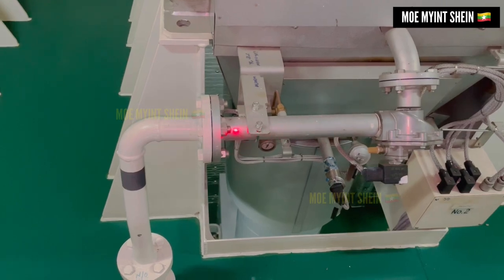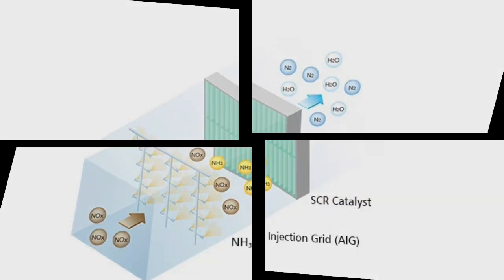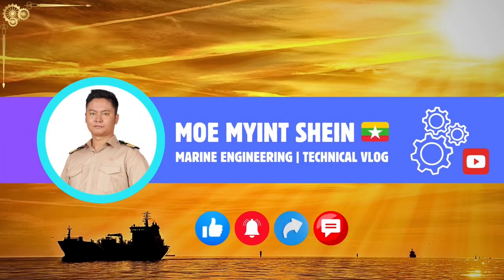The main concept of the SCR system is: when urea water is injected into high-temperature exhaust gas, ammonia is formed by thermal decomposition and hydrolysis. The formed ammonia and NOx are then reduced into harmless water and nitrogen through chemical reactions in the catalyst. Thanks for watching everyone — I appreciate your support. If you like this video, please consider subscribing, and I can't wait to see you in the next one.